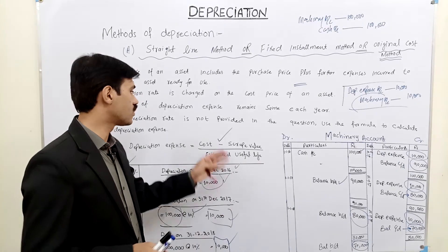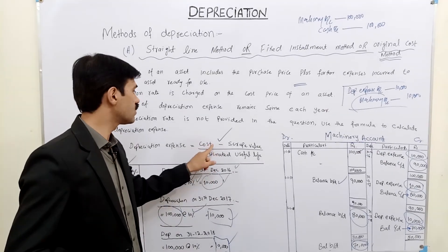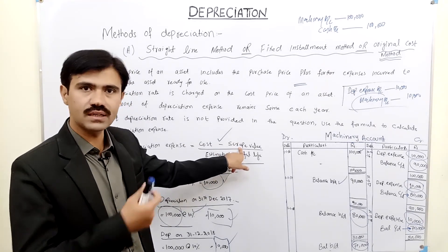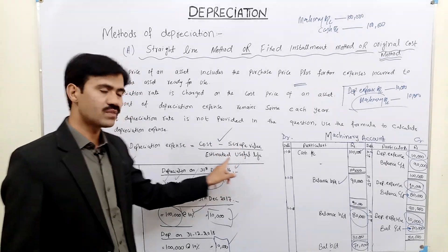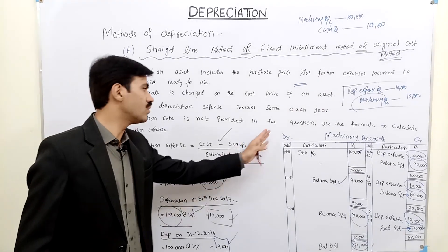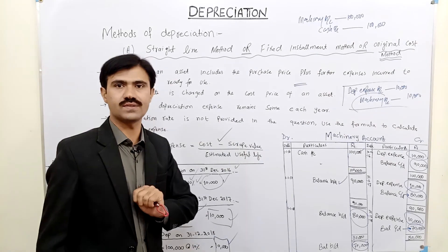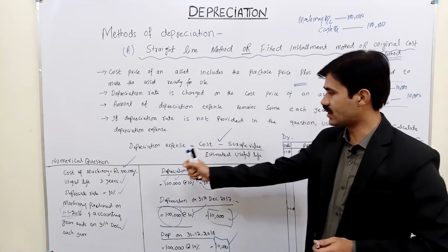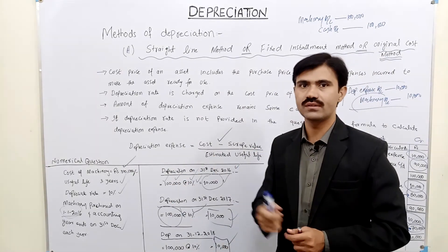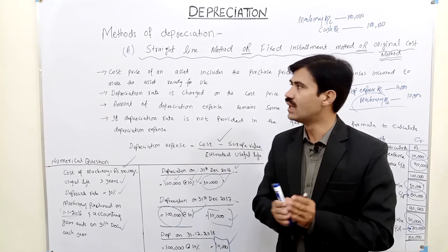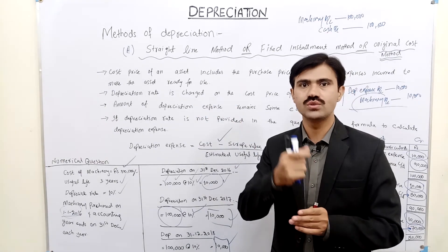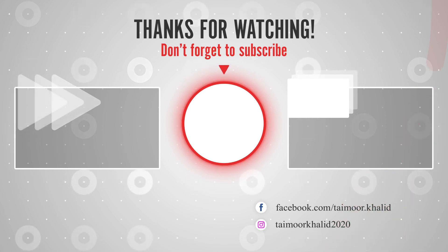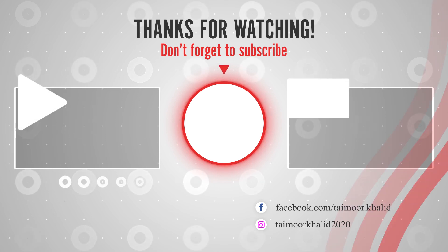If the rate is not given, use the formula. You can now calculate the cost price, depreciation amount, and related requirements. Follow the lecture — thank you so much for watching.